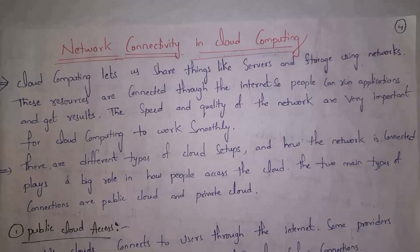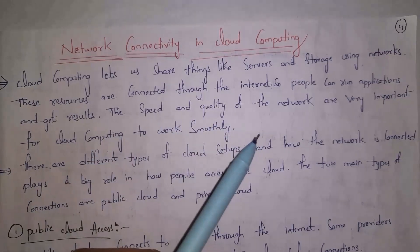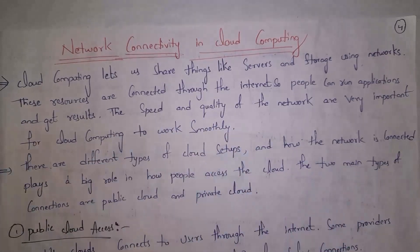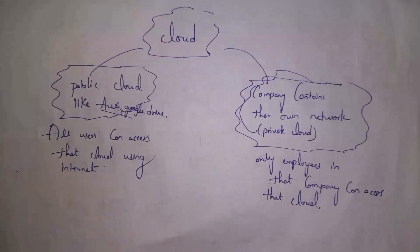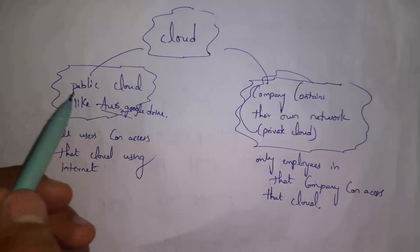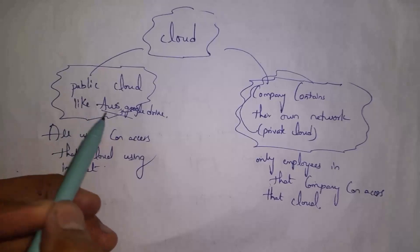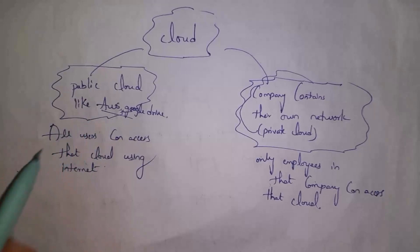There are different types of cloud settings, and how the network is connected plays a big role in how people access the cloud. The two main types of connections are public cloud and private cloud. For example, if you consider AWS and Google Cloud, everyone can use them by using the internet, so we call them public clouds.